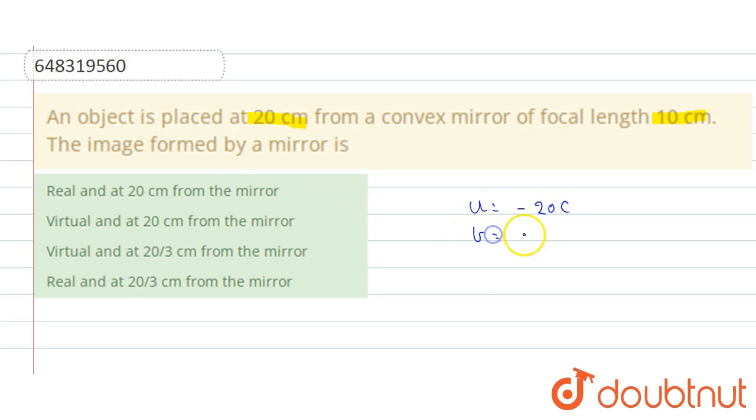And the focal length is given as 10 centimeter. And by mirror formula, we know 1 by f is equals to 1 by v plus 1 by u.